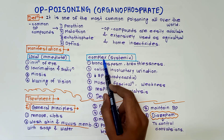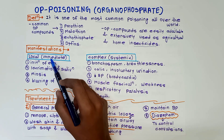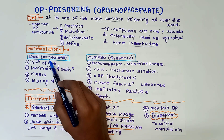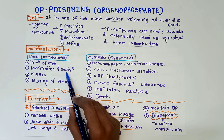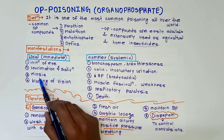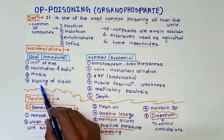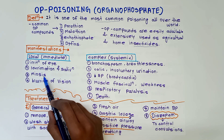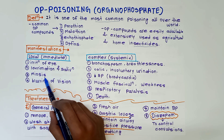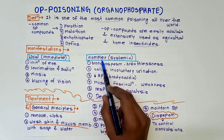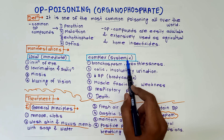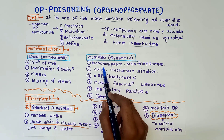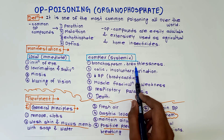Next are manifestations. There are two types: local or immediate manifestations, and complex or systemic manifestations. Local manifestations include irritation of the eye, lacrimation, salivation, miosis, and blurring of vision. Miosis refers to a decrease in size of the pupil.